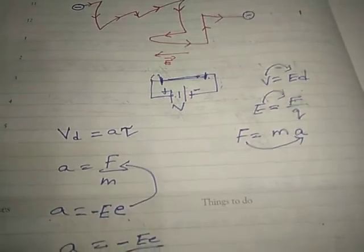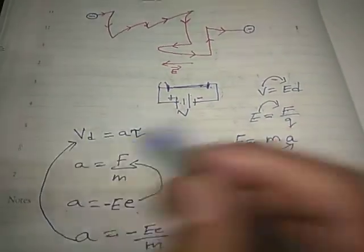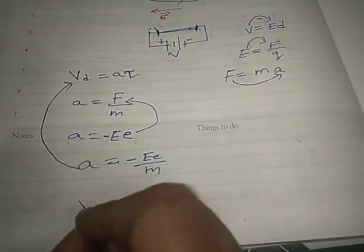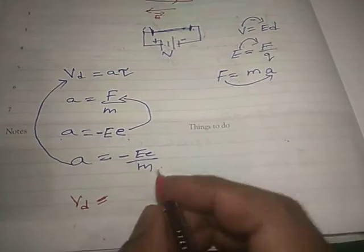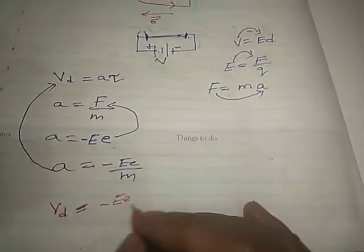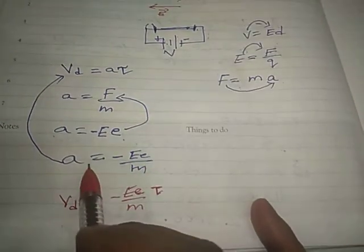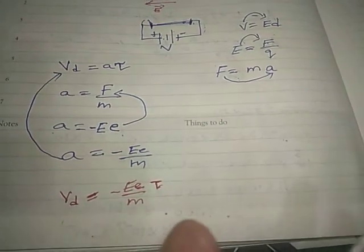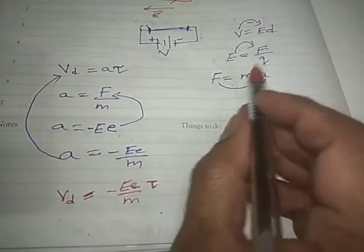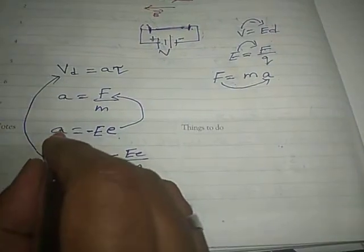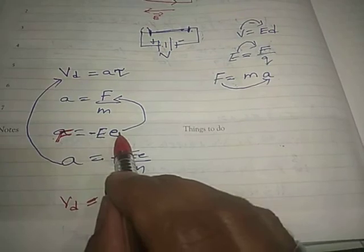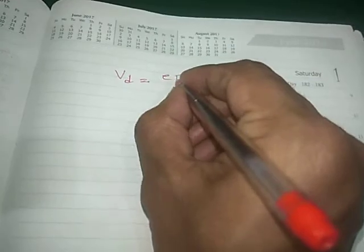Substituting the value of a into the expression: a is equal to minus eE by m. Now substituting into Vd equals a times tau: Vd is equal to minus eE by m into tau. Taking the magnitude, Vd is equal to eEτ by m, or equivalently e tau by m into E.